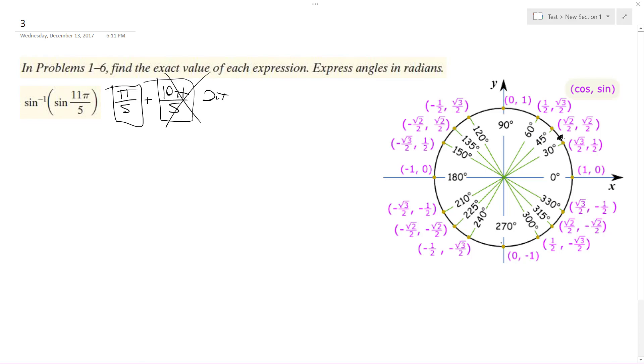But we do know that the inverse sine is bound between negative pi over 2 and pi over 2, so it is going to be up here. So coterminal equivalent of 11 pi over 5 is pi over 5.